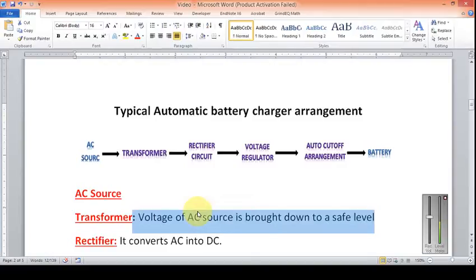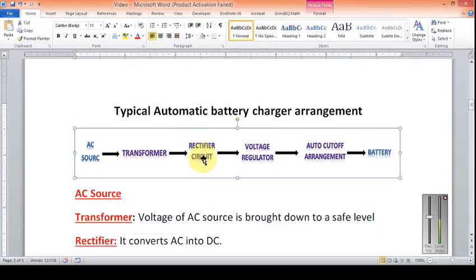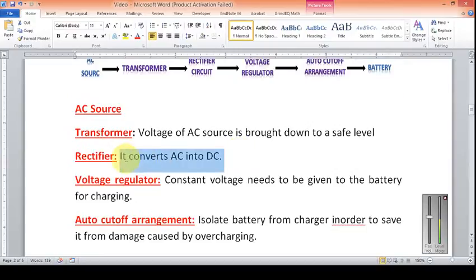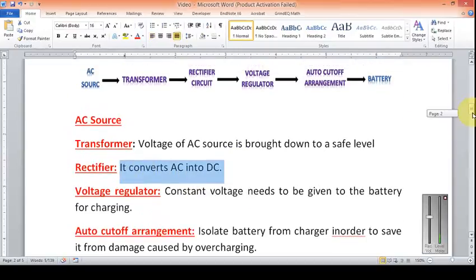The next component is the rectifier circuit. The rectifier circuit converts the AC voltage into DC voltage, because battery is a DC component and needs DC voltage for charging. So we need DC voltage to charge the battery.